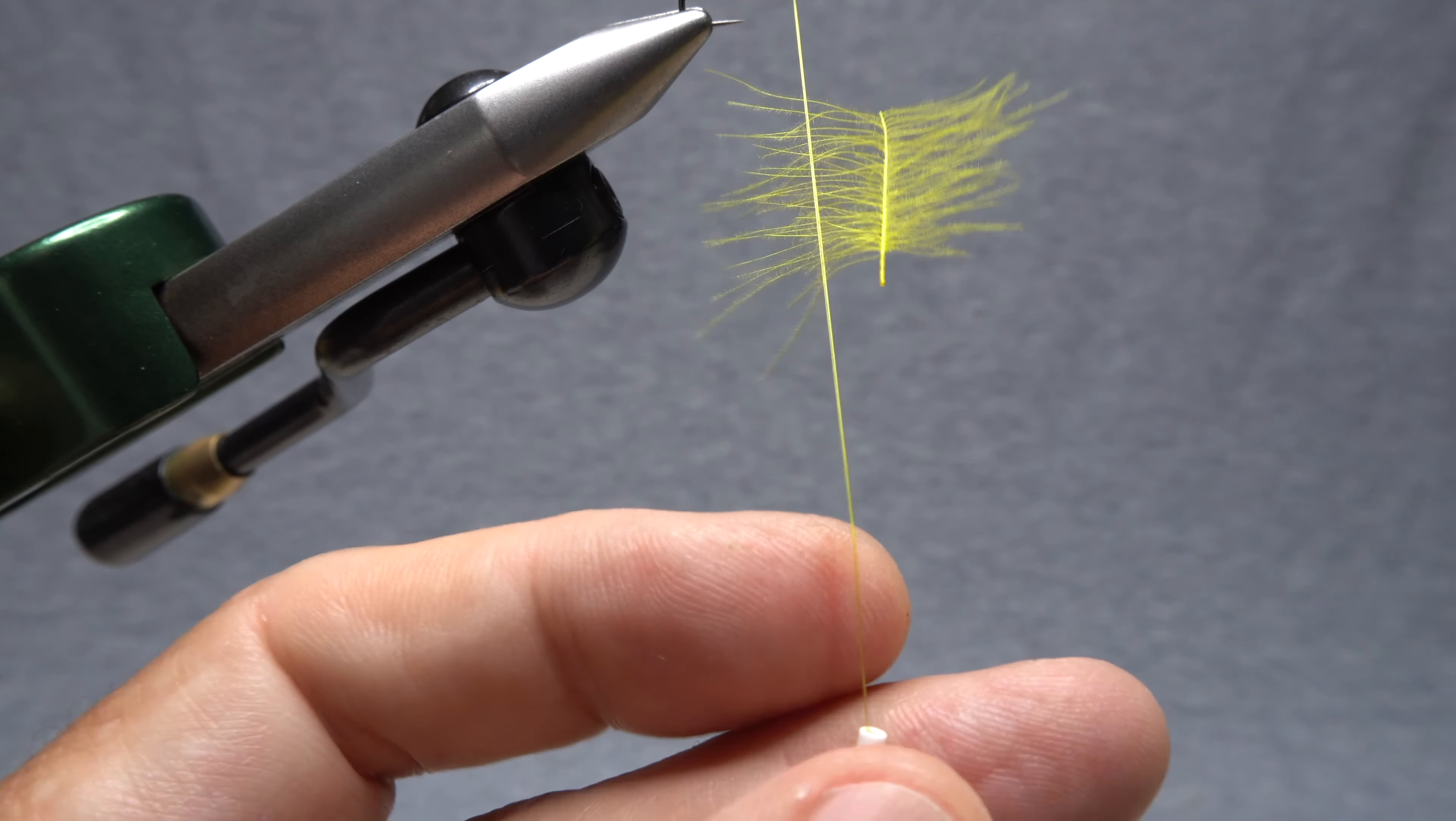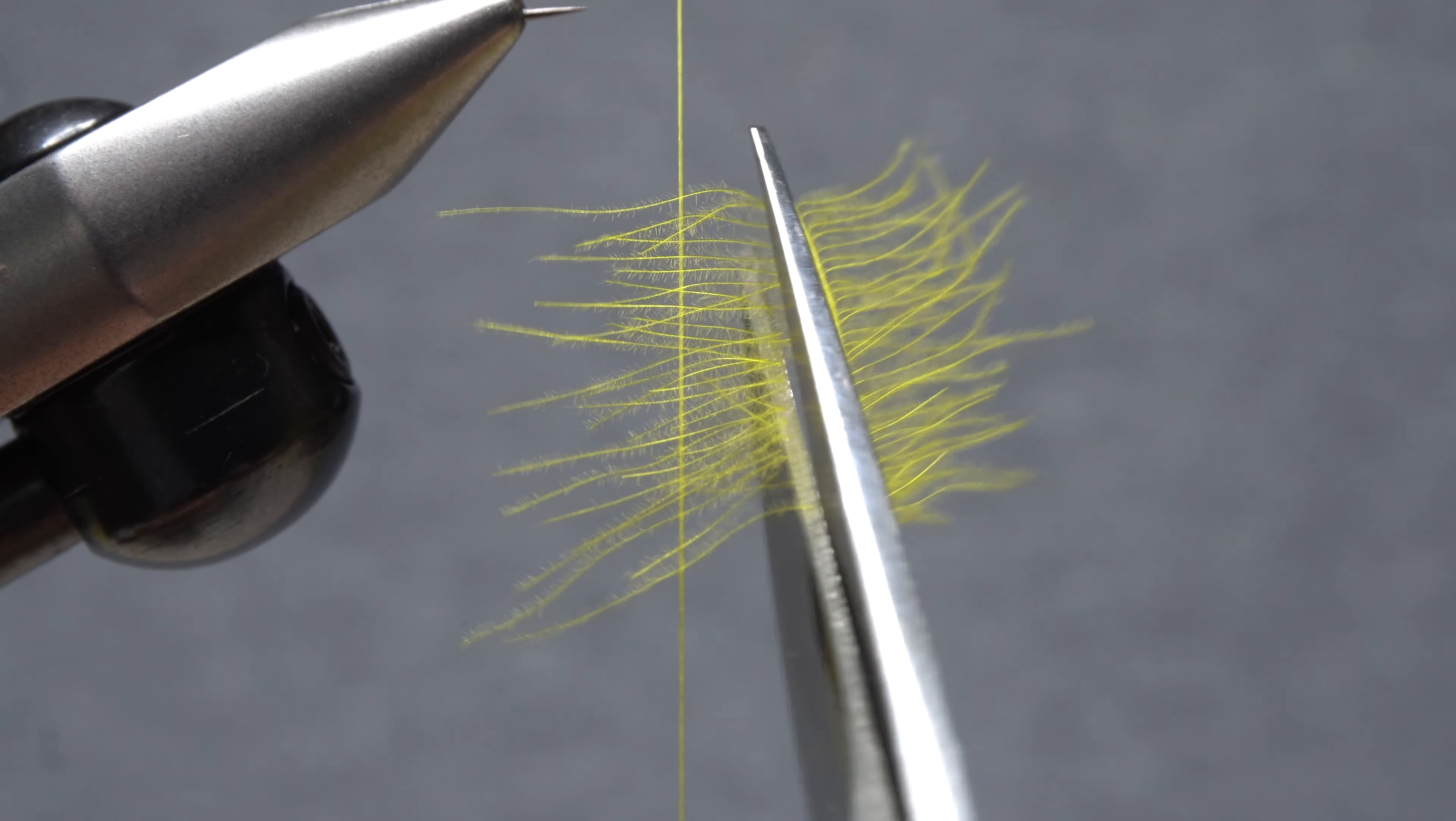Release the clip and carefully snip the stem portion away from the fibers held by the thread.